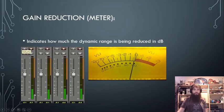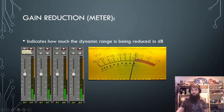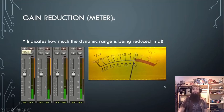Sometimes you'll see your gain reduction meter as a VU meter — it starts at zero and makes its way back. Light compression is around negative 3 to negative 5 dB; heavy compression is negative 7 to negative 10 dB. Keep an eye on your gain reduction and make sure you're not compressing too much.